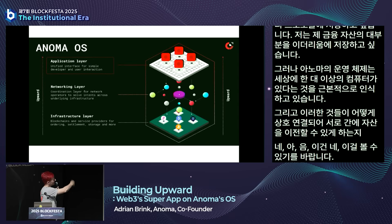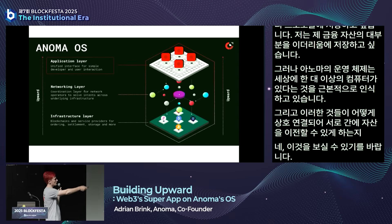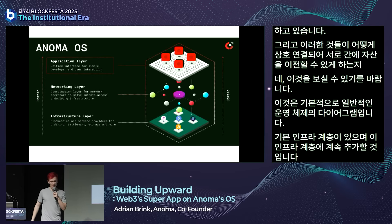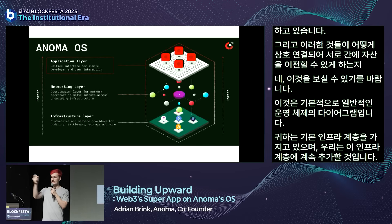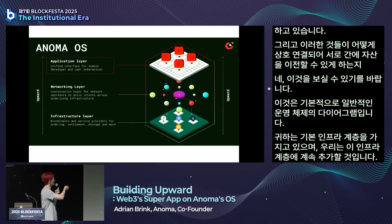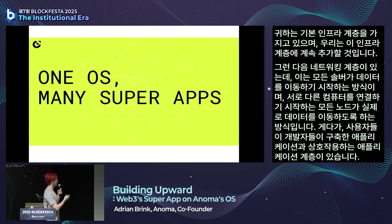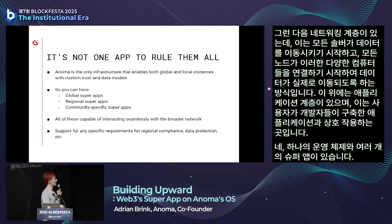This is essentially the diagram of Anoma as an operating system. You have an underlying infrastructure layer, which we will keep adding to. Then you have a networking layer—how all the solvers start moving data around, the nodes connecting different computers and shuttling data. On top of this you have an application layer, where users interact with applications that developers build. One OS, many super apps.